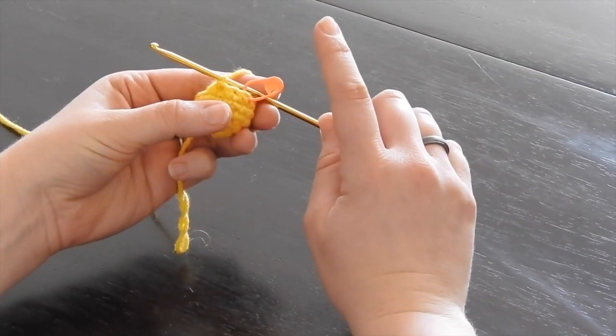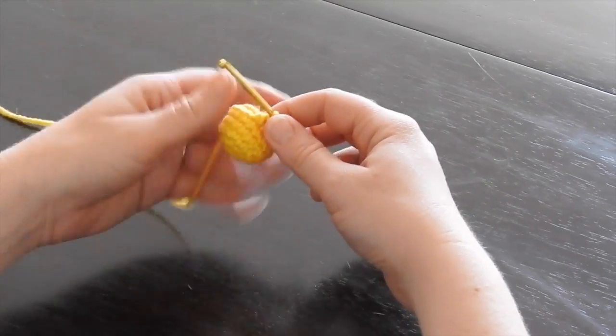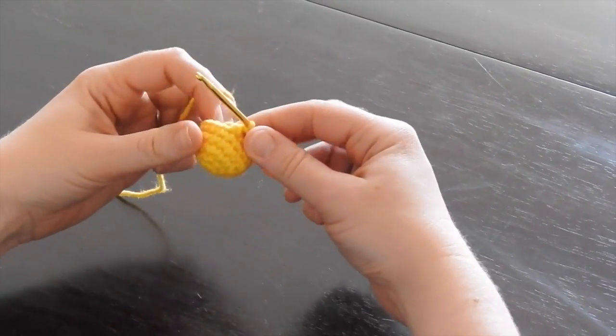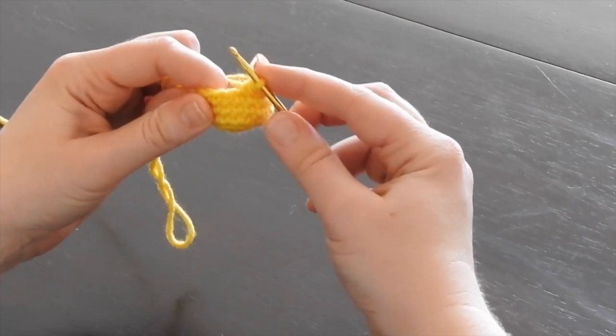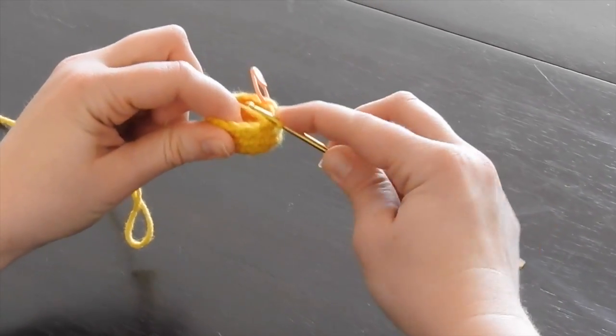Now what I want to show you is one called the invisible decrease. Since I learned how to do this one, I have not gone back to the standard decrease. Let me show you why. With the invisible decrease, you're going to be working through the front loops only. You're going to leave these back loops alone.